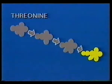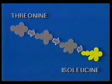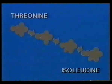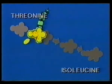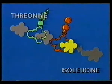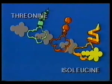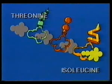Consider one particular series of reactions in the cell: the chemical threonine is converted step by step to produce an amino acid, isoleucine. Isoleucine is an essential building block for some proteins. The reaction is accelerated by several different enzymes.